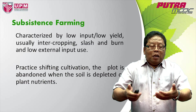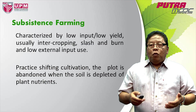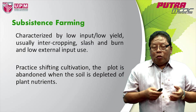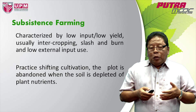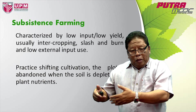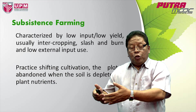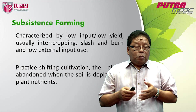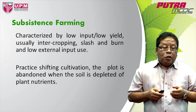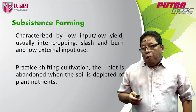They practice what is called shifting cultivation — they shift from one area to another area. After you plant a crop for some time, the plant will deplete the nutrients, and the plant cannot grow because the soil is depleted. So they move to another plot and grow the plants, and when that area becomes depleted of nutrients, they move to another plot. This is shifting cultivation, and the plot is abandoned when the soil is depleted of plant nutrients, continuing a nomadic type of farming.